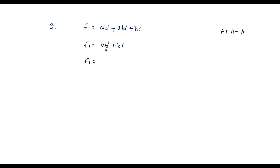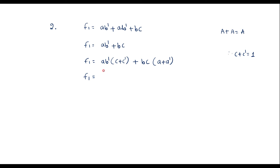Let me simplify further. Here the variable c is missing in ab dash, so it can be added as ab dash times (c plus c dash), since c plus c dash equals 1. Similarly, in bc, variable a is missing, so I add (a plus a dash). Expanding: F1 equals ab dash c plus ab dash c dash plus abc plus abc plus a dash bc.